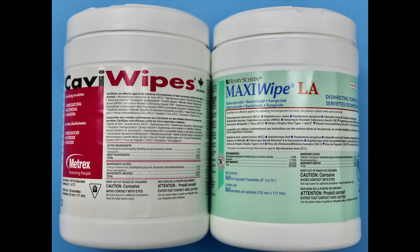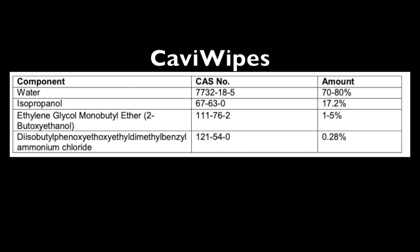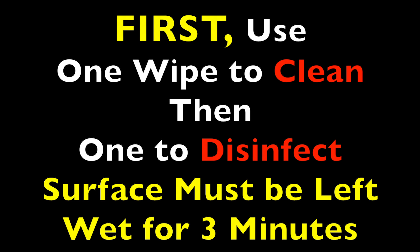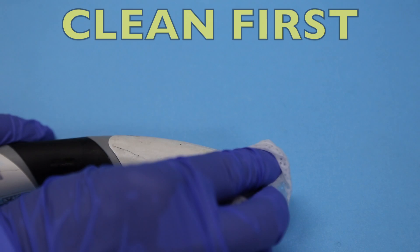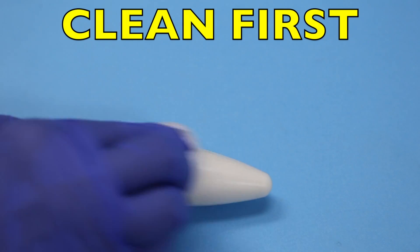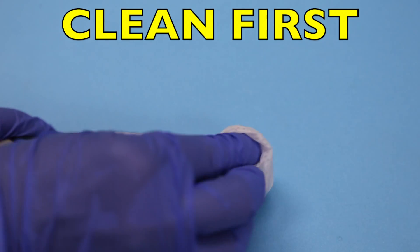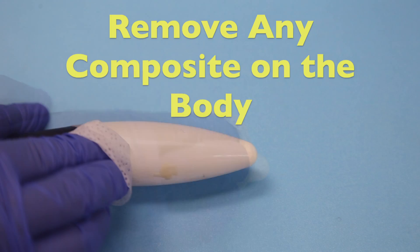Here we're using CaviWipes, but a similar product such as MaxiWipes could be used and neither product should damage the light or the light guide. First, we'll use one CaviWipe to clean and then we'll disinfect afterwards with the second wipe. When we're cleaning, you'll notice that we're going from one end to the other.